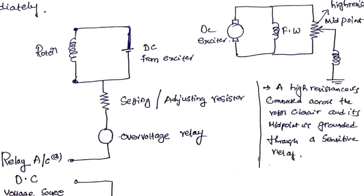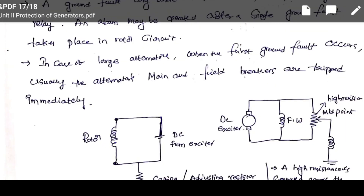We have to identify the fault and the rotor will be protected. Whenever the first ground fault occurs, usually the alternator's main and field breakers are tripped immediately. When the alternator is large, upon occurrence of a ground fault, the main field winding breakers are tripped.